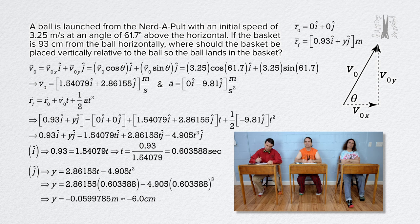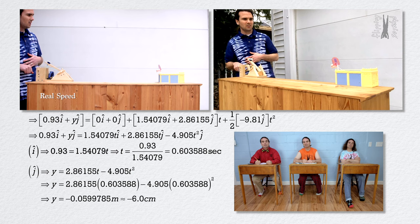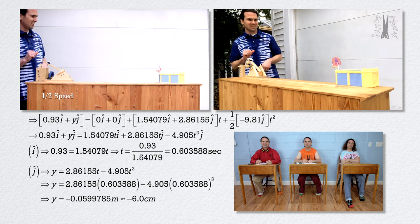In other words, the basket needs to be placed 6.0 centimeters below the original height of the ball just like we got last time. Yep, the physics still works. Cool.